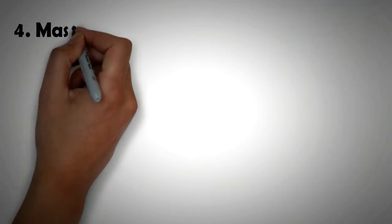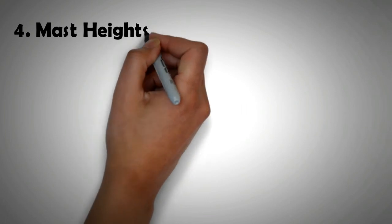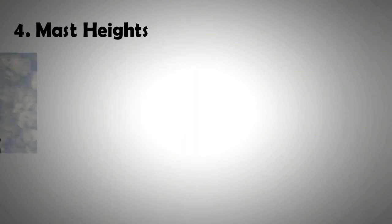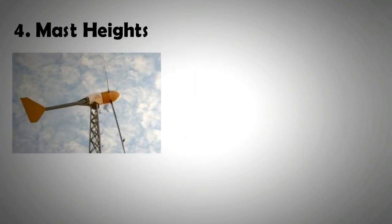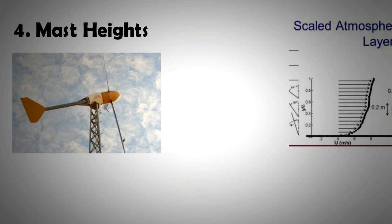Reason number four is the mast height. Small wind turbines are mounted on masts that are about 10 meters long. Although there are certain small turbines that come with telescopic masts that give them a relatively higher height.